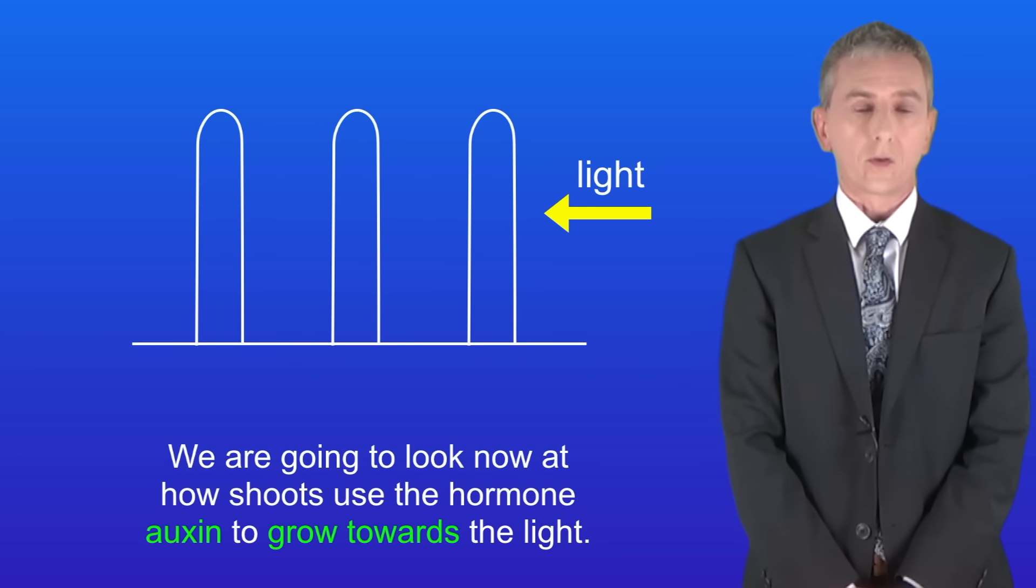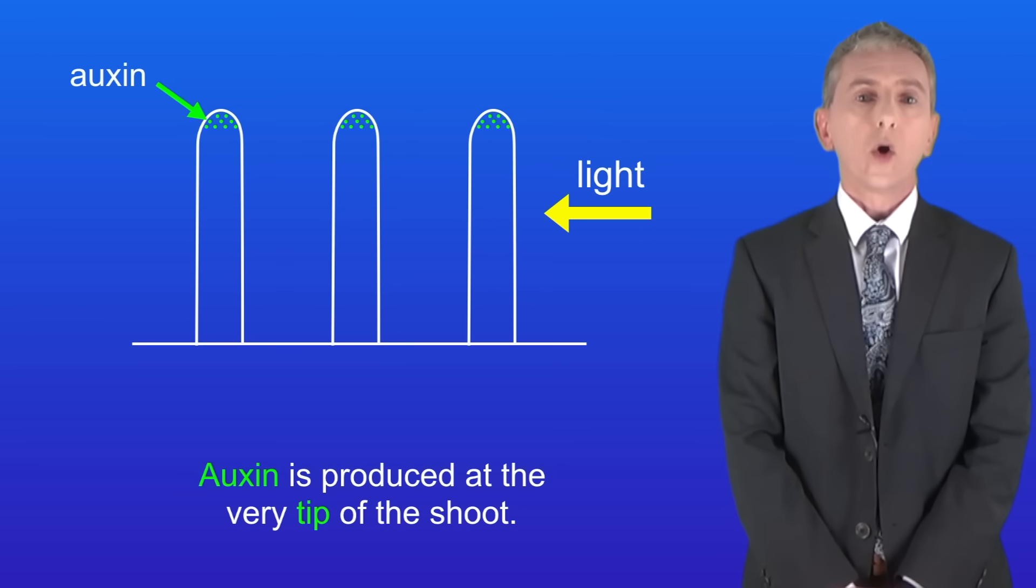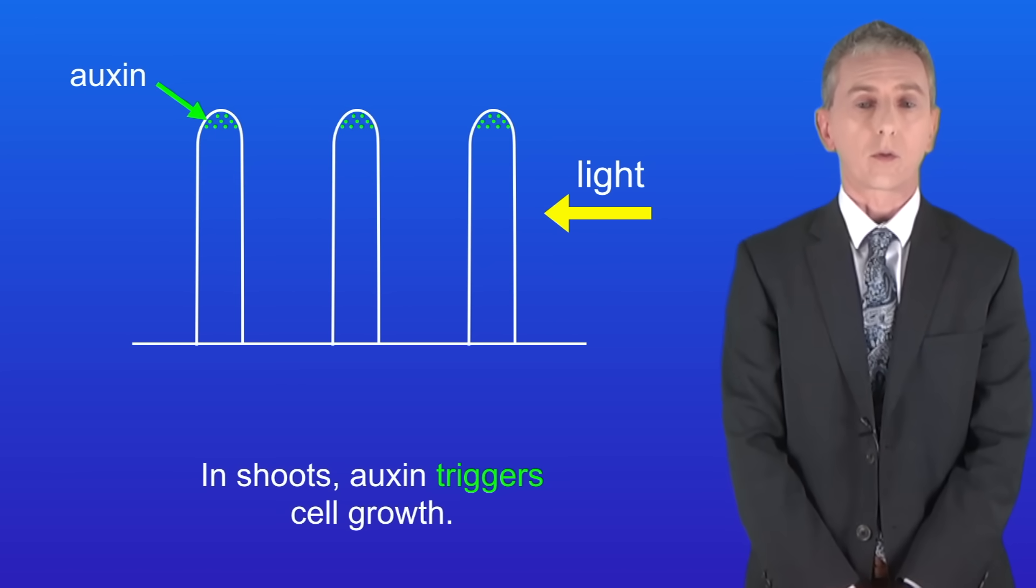So we're going to look now at how shoots use the hormone auxin to grow towards the light. I'd recommend that you learn these stages. Auxin is produced at the very tip of the shoot, and in shoots, auxin triggers cell growth.